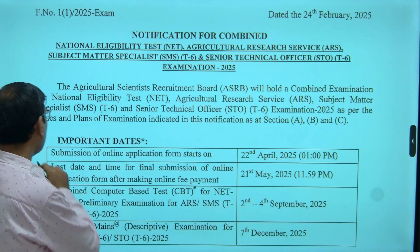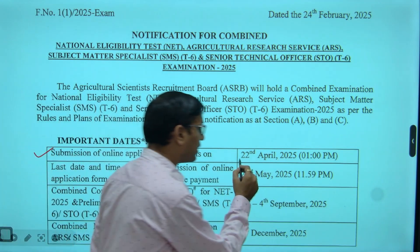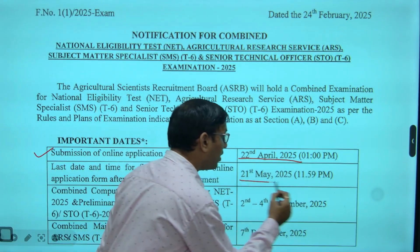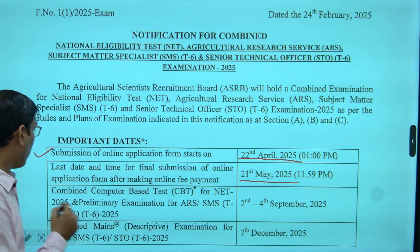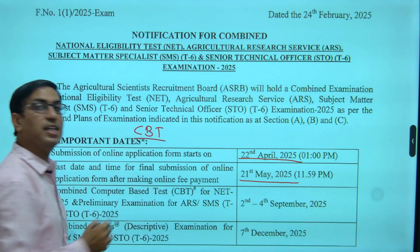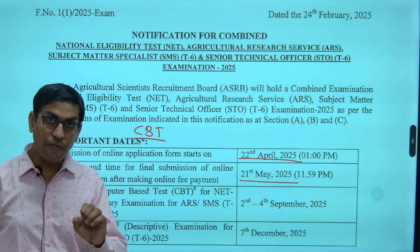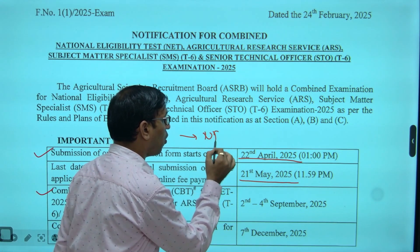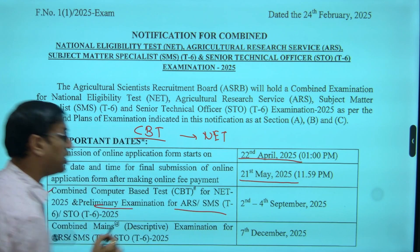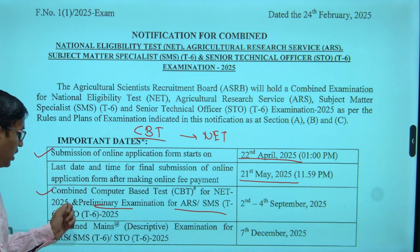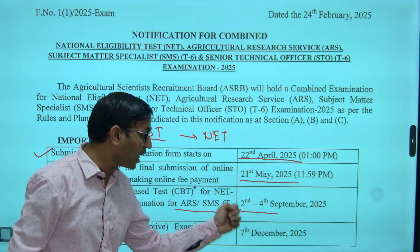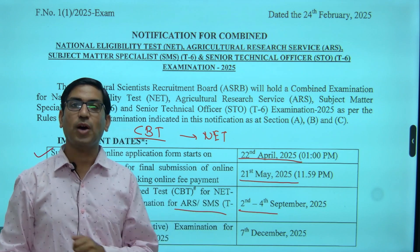When we are talking about the notification, it starts from 22nd April 2025 till 21st May 2025. The test is a computer-based test (CBT), in which the examination of NET along with the ARS pre-examination is also going to be there, on dates within the purview of 2nd to 4th September 2025.